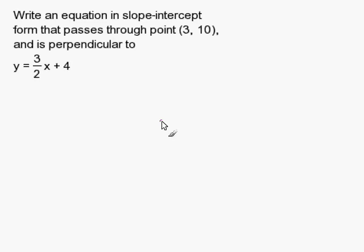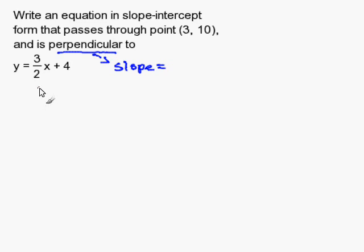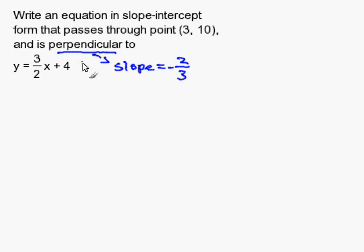To start this problem, I must find the perpendicular slope. The perpendicular slope is the negative inverse of the slope given. So for 3 over 2, you take the inverse by flipping the fraction to get 2 over 3, and then apply the negative. My perpendicular slope is negative 2 over 3.